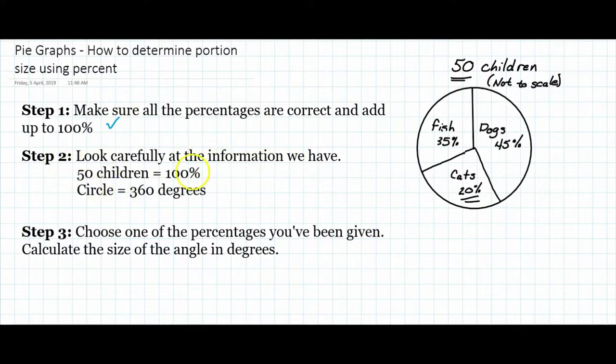Step two: look carefully at the information we have. We know that we asked 50 children, so that makes up 100%, and we also know that a circle is 360 degrees. So that means 100% is 360 degrees.